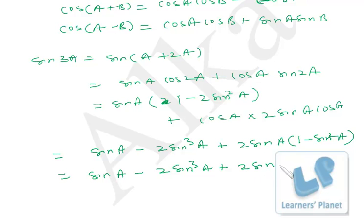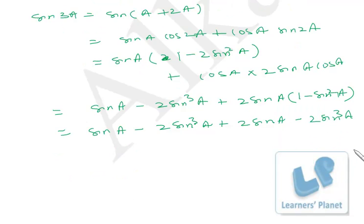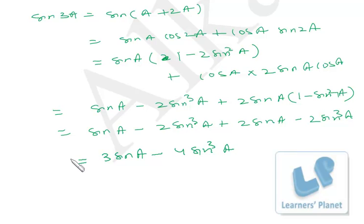So after expanding and simplifying: sin 3A = 3 sin A − 4 sin³A. Similarly you can calculate cos 3A on your own. So you learn to derive and you also have to remember the final result.